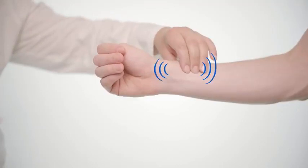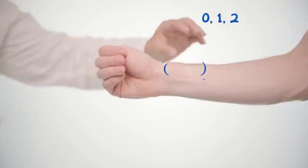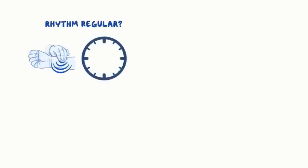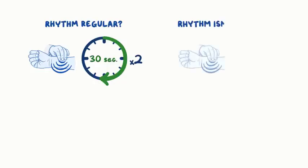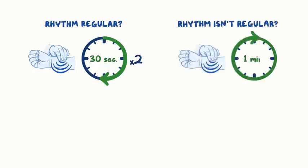Count the first beat you feel as 0. The second beat is 1, the third beat is 2, and so on. Is the rhythm regular? If so, count how many beats occur in a 30-second window and multiply by 2 to get the heart rate. If the rhythm isn't regular, count the number of beats in a full minute.